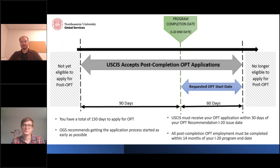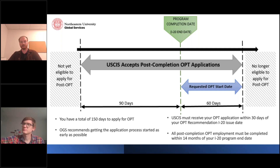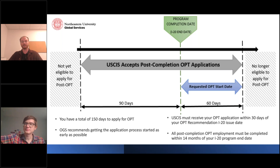As long as USCIS receives your application within 30 days of our recommendation, there should be no issues. You also have 60 days after your program end date to apply. If you want to wait to communicate further with employers about your start date, you have that option, though the longer you wait, the more risk is involved. Once you pass the 60-day grace period you are no longer eligible to apply for post-completion OPT, and a denial on day 61 cannot be appealed.